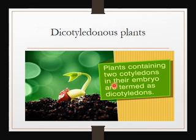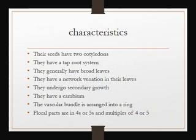Plants containing two cotyledons in their embryo are termed dicotyledonous. I shouldn't forget that the word 'mono' means one and the word 'di' means two. So the first characteristic of dicotyledonous plants that you should never forget is that they have two cotyledons in their embryo.